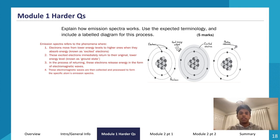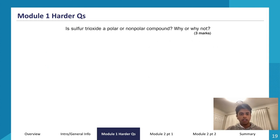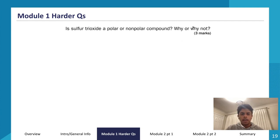That's the first question — hopefully you have an understanding of how to process and answer it. Now let's move to the next question: is sulfur trioxide (SO₃) a polar or non-polar compound? Why or why not? It's three marks. One mark for identifying whether it's polar or non-polar, and two marks for explaining why. So the first sentence is your identification, and then you'd have two sentences of explanation.